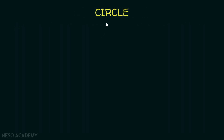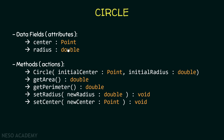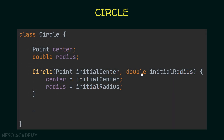Now let's consider the Circle class as before — it has certain attributes and methods. We want to add a constructor called Circle, since the class name is Circle. This constructor takes two parameters: a Point called initialCenter and a double called initialRadius. When we create Circle objects, we pass these two arguments to initialize the center and radius attributes.